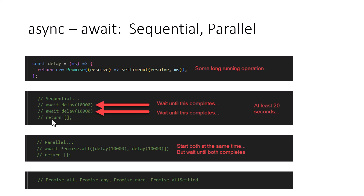There may be times when two operations can run independently of each other. In that case, you can use promise.all and trigger both at the same time, because they are independent operations. Once both of them complete, the control goes to the next line. The advantage here is that since they are both running at the same time, you minimize the amount of time required.